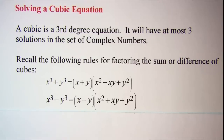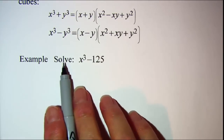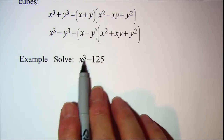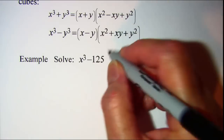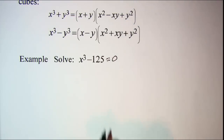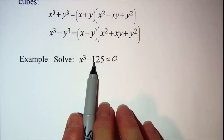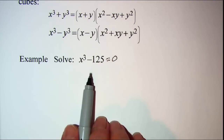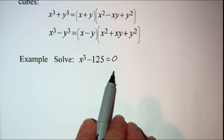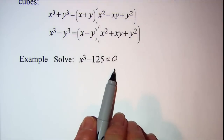So let's do a problem. The example we'll be doing is to solve x³ minus 125 equals zero. Now if we took 125 to the right side we'd have x³ equals 125, and then cube rooting both sides we would get x equals 5.